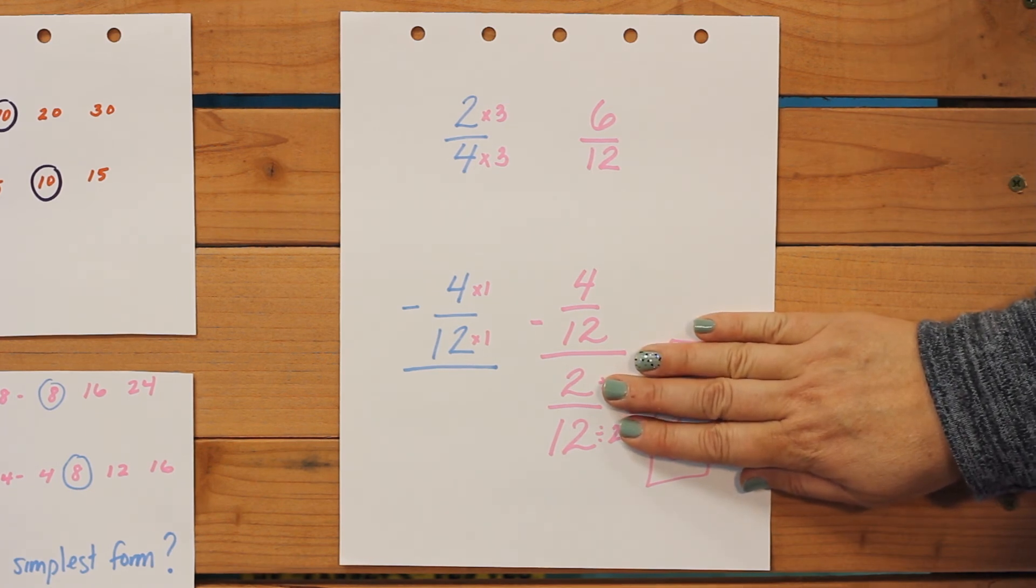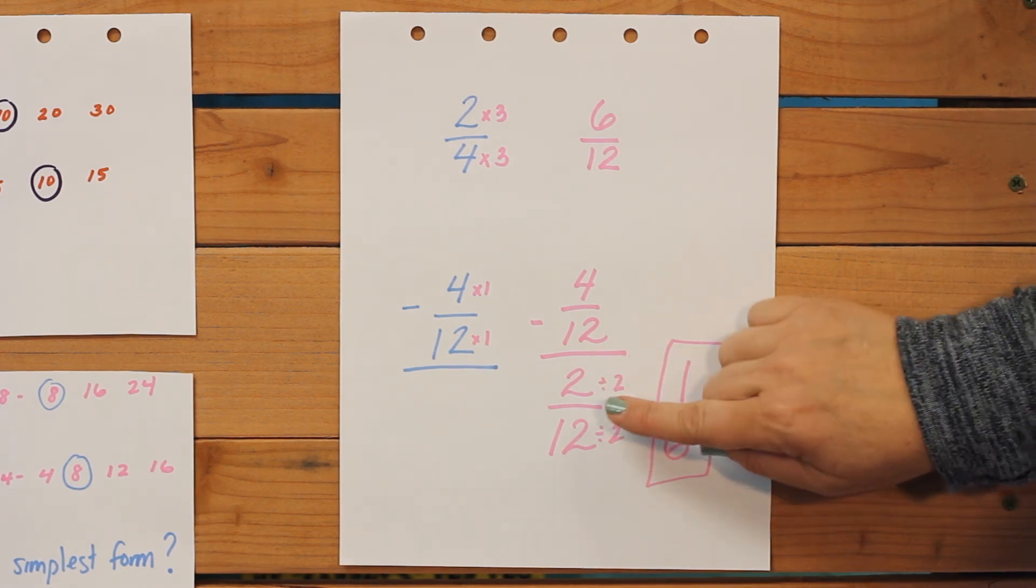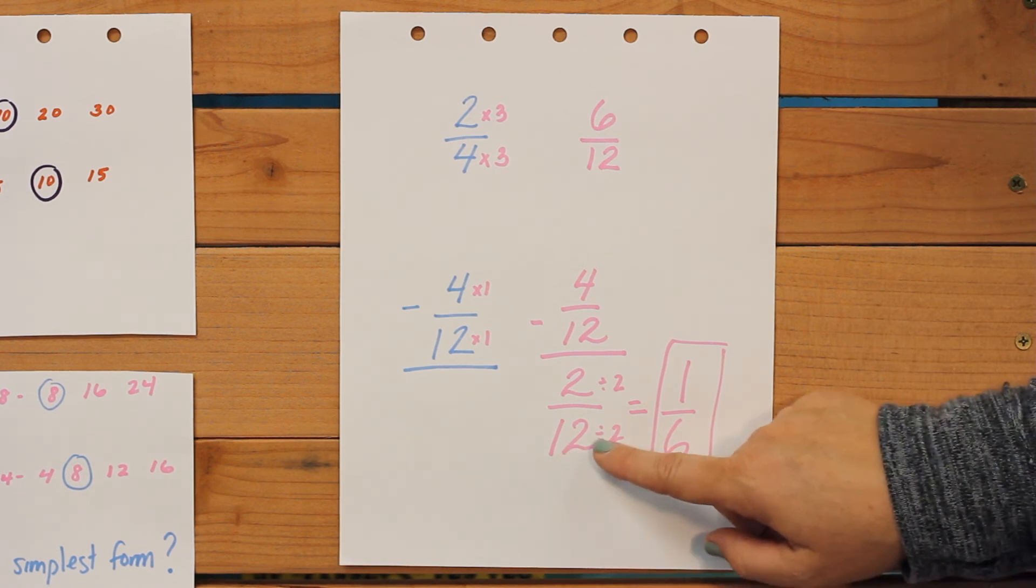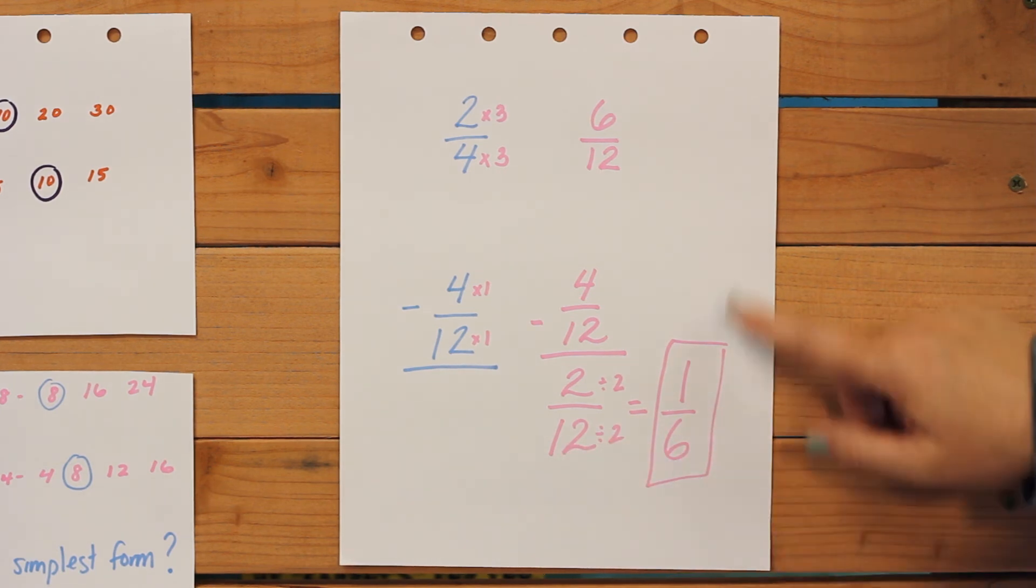And I already know they're even numbers, so they're going to go into each other. So two divided by two is one. Twelve divided by two is six. And your final answer is going to be 1/6.